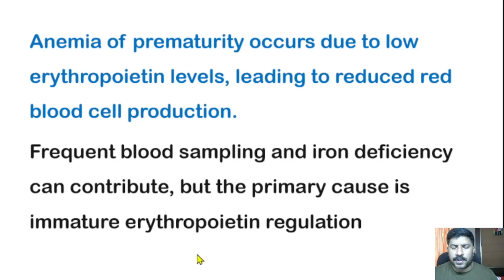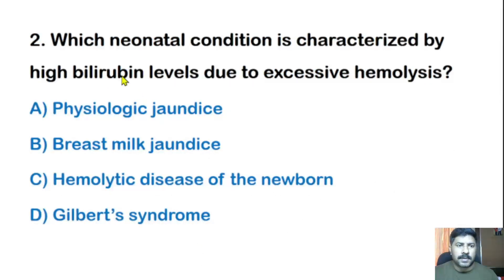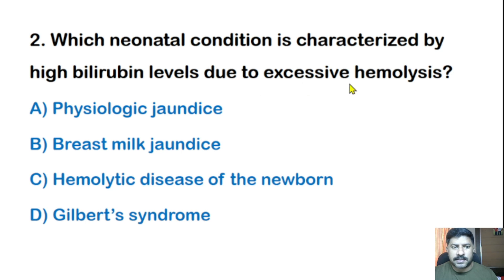Anemia of prematurity occurs due to low erythropoietin levels leading to reduced red blood cell production. Frequent blood sampling and iron deficiency can contribute, but the primary cause is immature erythropoietin regulation in prematurity.